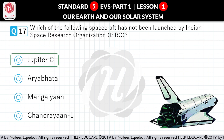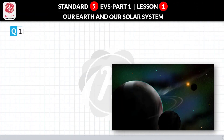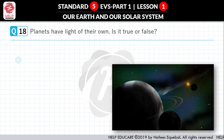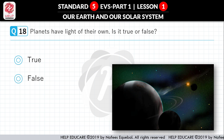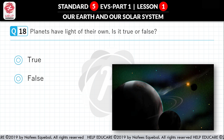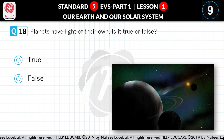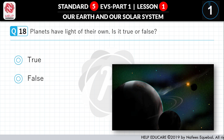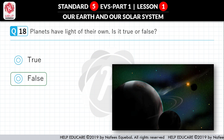Question No. 18: Planets have light of their own. Is it true or false? First option: True. Second option: False. Correct answer is False.